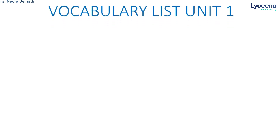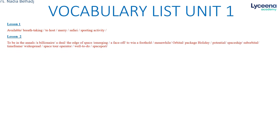Welcome back. This is the last part of our unit. I'm going to give you the vocabulary list for all the unit with all the lessons — things that you really have to remember. Mainly for the vocab for lesson number one: available, breathtaking, host, safari, sporting activity, etc. For lesson number two, you have a list of all the vocab related to space tourism. This is something we need to know before we start the lesson.